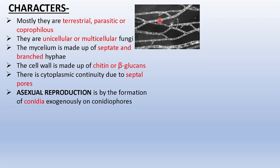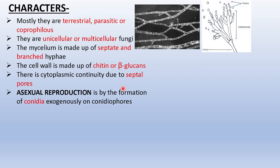Asexual reproduction is by the formation of conidia, produced exogenously on conidiophores. Exogenously means the spores are produced outside the structure. The hyphae grow upon the substratum, and when it is time to reproduce, they stand erect, produce a bulbous structure, and the spores are present outside — growing outwardly. Here you can see the conidiophore with the conidia growing exogenously outside.